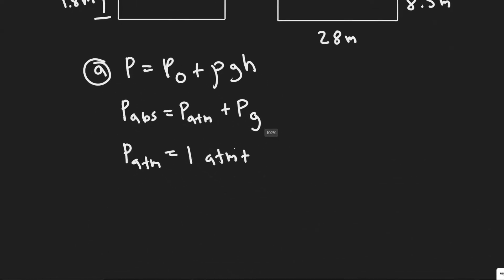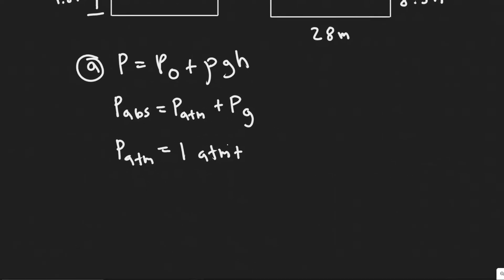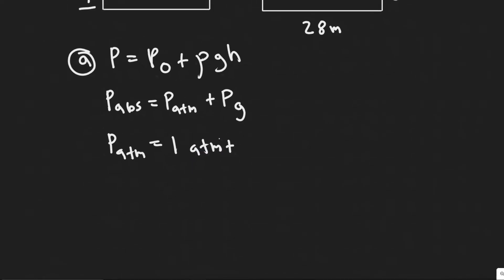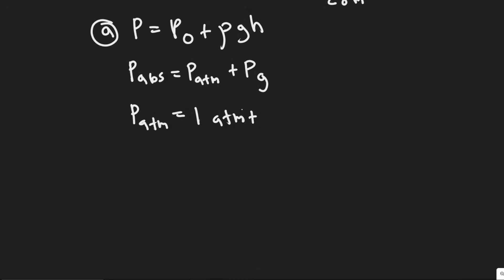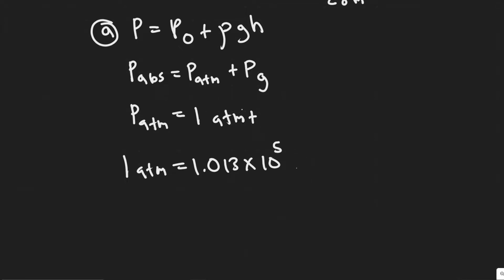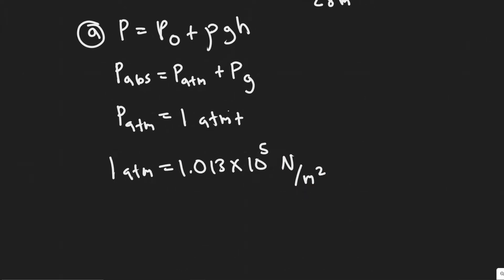We need everything in pascals, not atmospheres, so we have to convert. You need to know the conversion: one atmosphere is equal to 1.013 times 10 to the 5. The units of a pascal are just newtons per meter squared — that's what a pascal is.